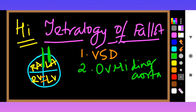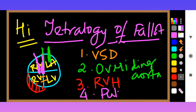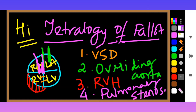The next important thing is right ventricular hypertrophy — the right ventricle will have hypertrophy. And the last one, number four, is pulmonary stenosis. This is the pulmonary artery, and it is stenosed, so number four is pulmonary stenosis.